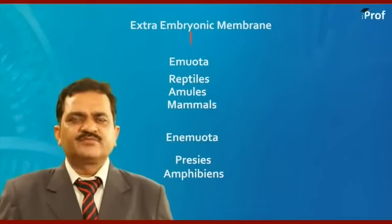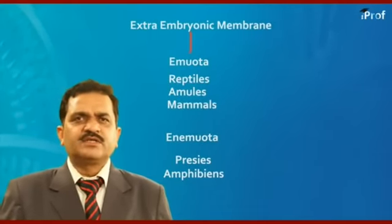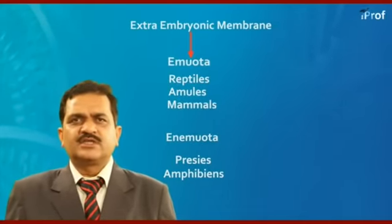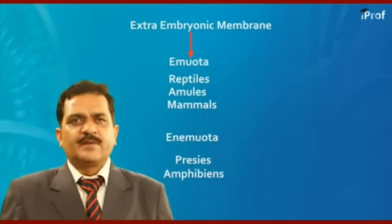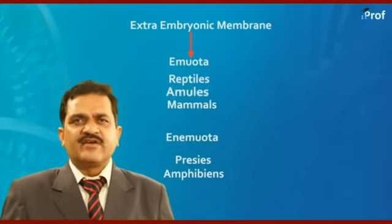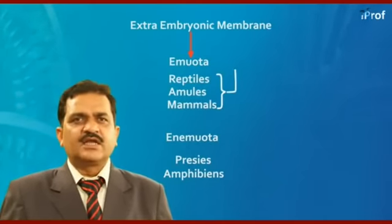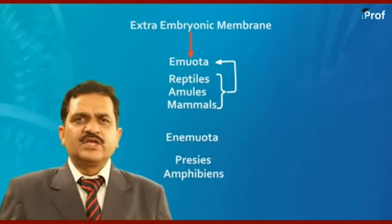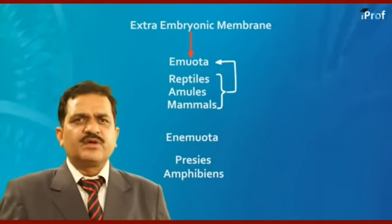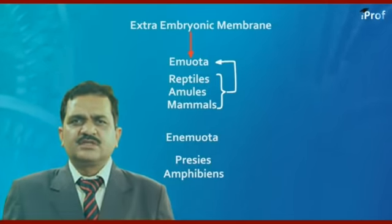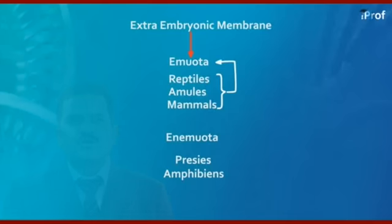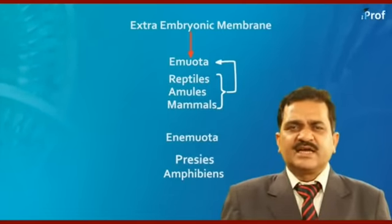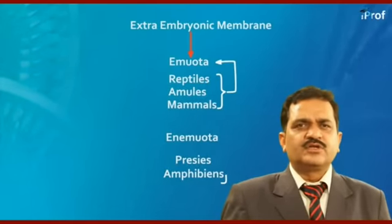Animals in which extra-embryonic membranes are present are called amniota — these include reptiles, aves, and mammals. Animals in which extra-embryonic membranes are absent are called anamniotes — Pisces and amphibians are included in this group.